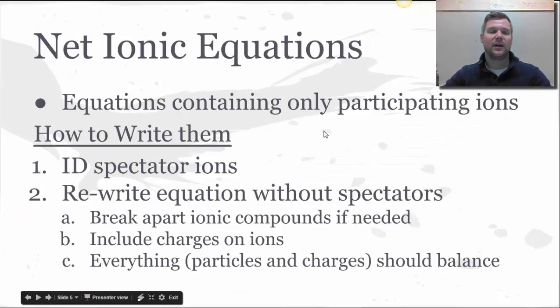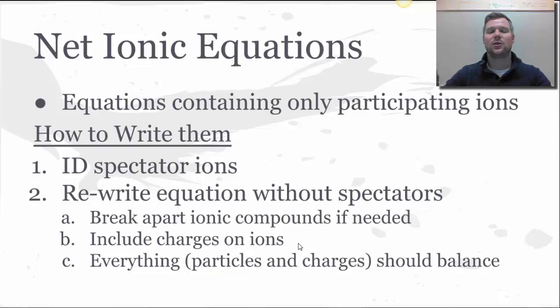So then net ionic equations are those where we remove those spectator ions and only keep the participating ions the important ones because that's the meat and potatoes of our reaction. We've already identified our spectators by circling them now we just need to rewrite that equation without those spectators and we need to remember a few things. First we need to break apart ionic compounds into their component ions. If it's aqueous it gets broken apart, include charges on ions. And then everything including both the number of particles and the charges on those particles needs to be balanced when we do a net ionic equation.